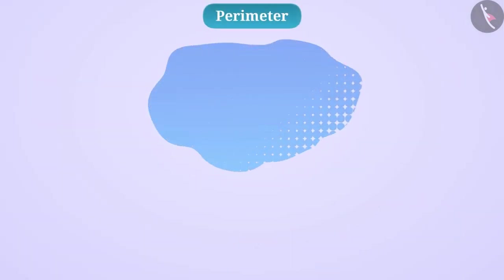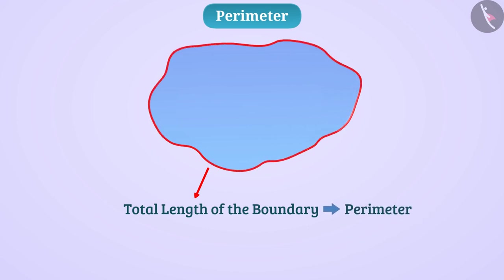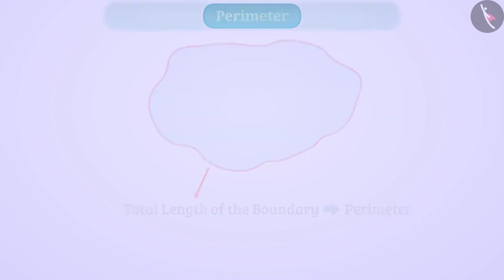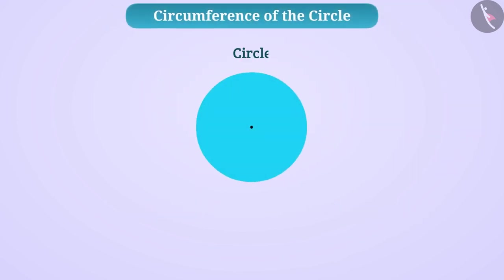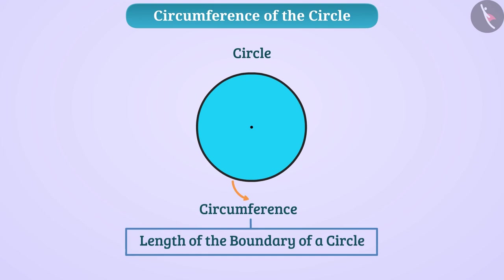We know that the total length of the boundary of a closed figure is called its perimeter. In the context of a circle, we call it a circumference. That is, the length of the boundary of a circle is called its circumference. We denote it as C.